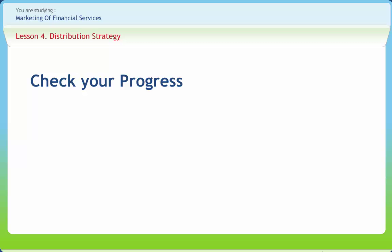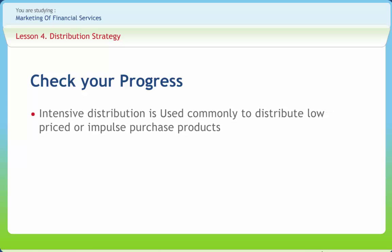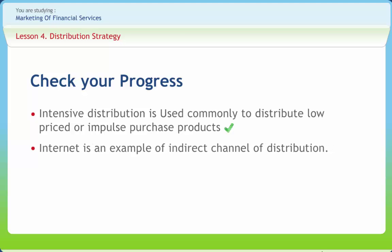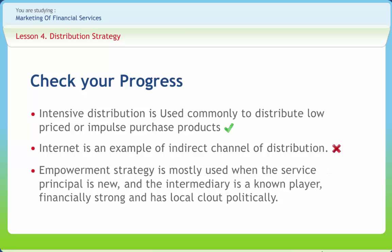Let's check if we have understood the various concepts discussed in this lesson. Intensive distribution is used commonly to distribute low priced or impulse purchase products — Right or Wrong? Right. Internet is an example of an indirect channel of distribution — Right or Wrong? Wrong. Empowerment strategy is mostly used when the service principal is new and the intermediary is a known player, financially strong, and has local clout politically — Right or Wrong? Right.